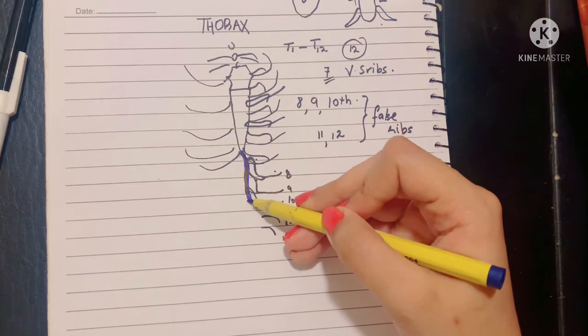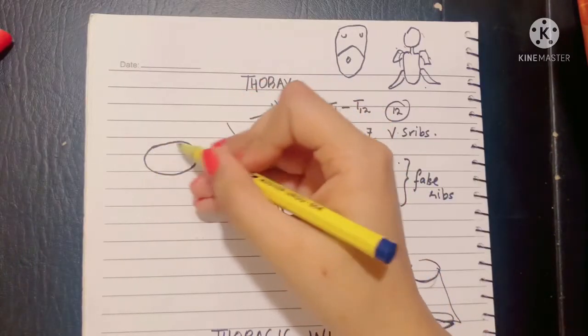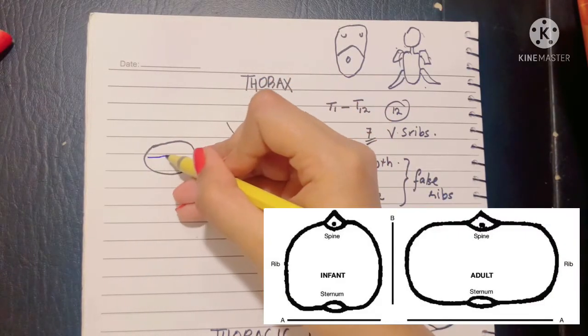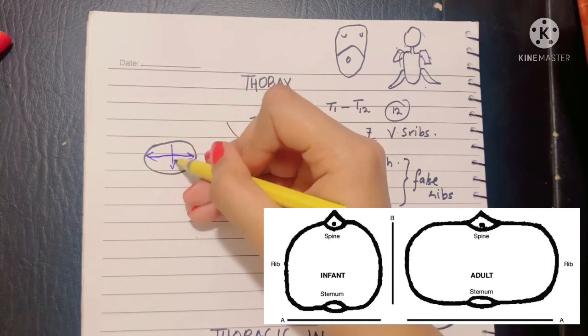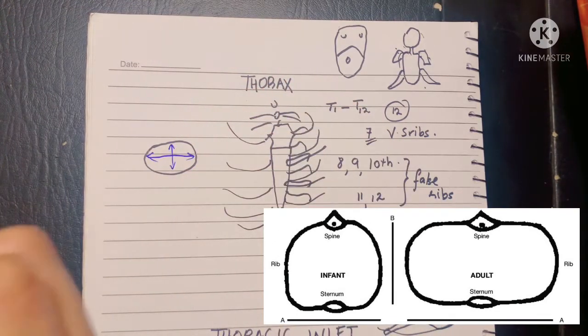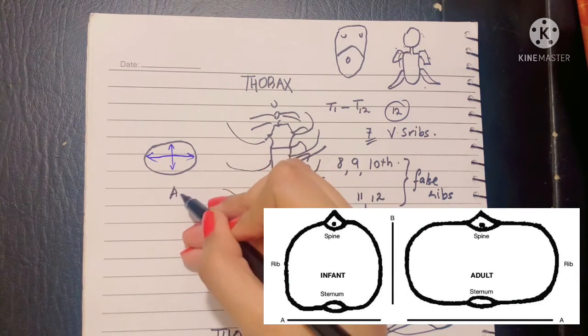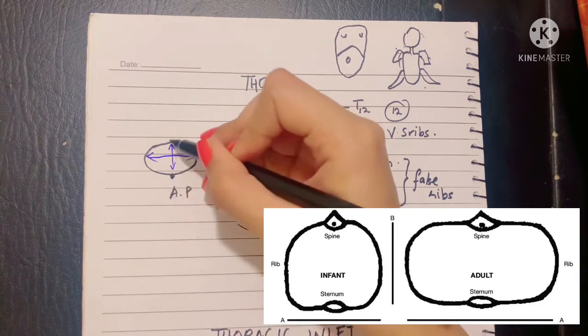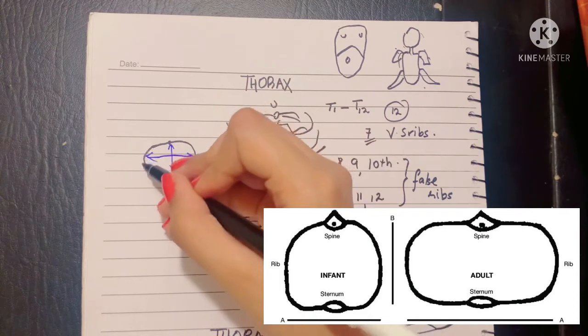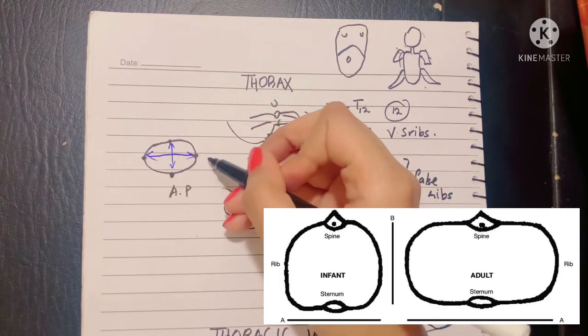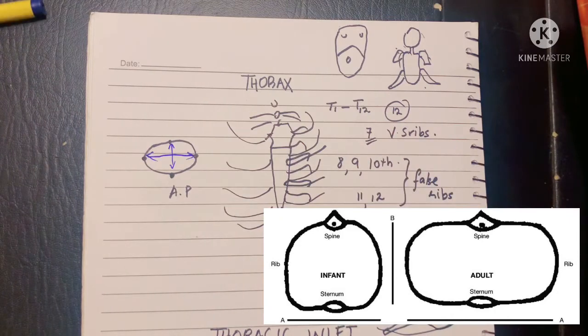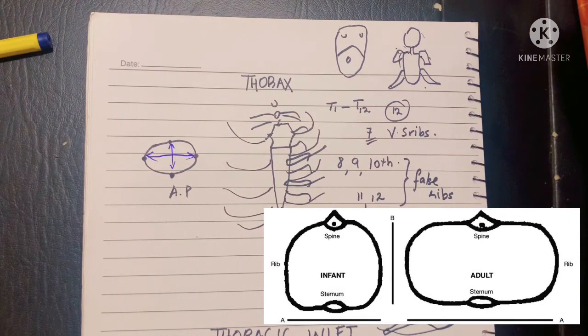The thorax basically has a greater transverse diameter than the anteroposterior diameter. So the AP diameter, AP meaning coming from the front to the back, is smaller than the transverse diameter, that is from rib to rib. So this is important because this causes the shape of the thorax to become oval.